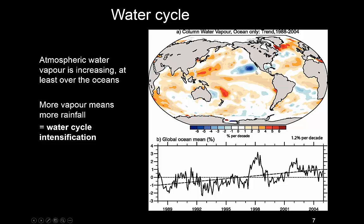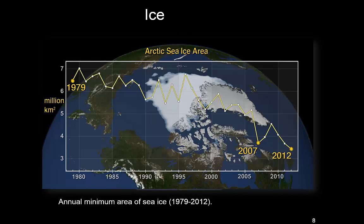From remote sensing missions we know that atmospheric water vapor is increasing, certainly over the oceans — on land it's a bit less obvious — and therefore we should expect higher rainfall. Indeed that is what we observe, particularly over the oceans. This is the process we refer to as water cycle intensification. It propagates through the whole water cycle: more rainfall can mean more runoff, more snow in particular areas, more groundwater and soil moisture. As you can see in this trend line, there is a clear trend in water vapor over the oceans, though with a lot of variability.